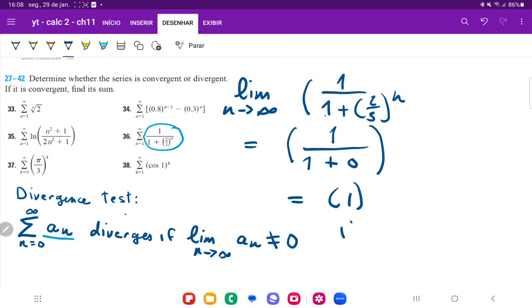So we can say that it diverges, it diverges because the limit as n goes to infinity is not equal to zero. So we can affirm that using the divergence test.